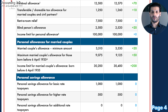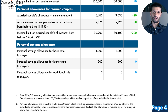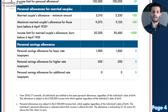The married couple's allowance acts as a tax reducer, so if you are married and born before the stated date on the handout, you are eligible for this. Finally, there's the personal savings allowance, which allows you as an individual to earn gross interest on savings up to the stated amount tax-free, depending on which category of taxpayer you fall into in the 21-22 tax year.